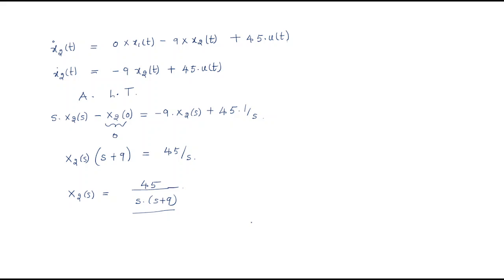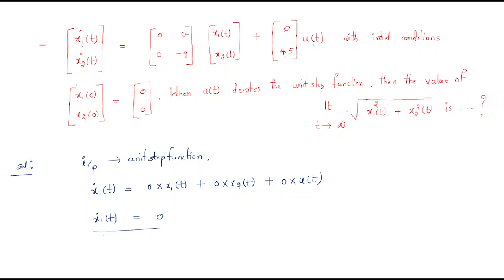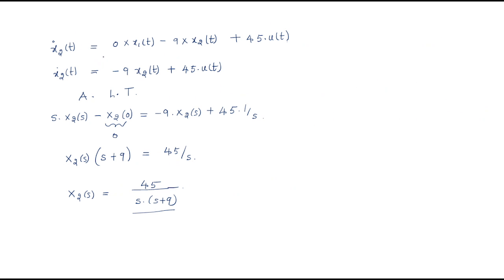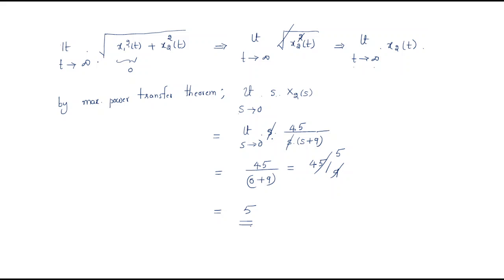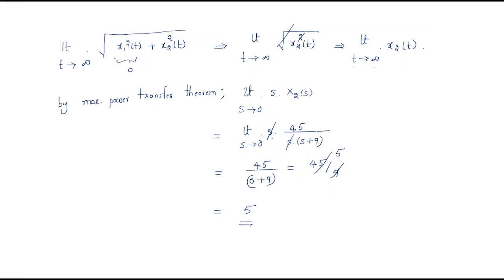So the final answer is 5. This is another important model problem: given state equations, find x1(t) and x2(t) individually, apply the Laplace transform, and then find the required limit. I hope all of you understand the session. Thank you.